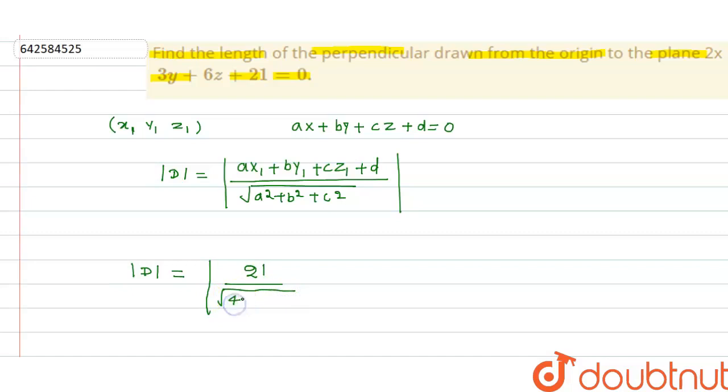So 4 plus this is square of 3 that is 9, and square of 6 that is equal to 36. So this is 21 upon, this is what, this will be I think root 49.